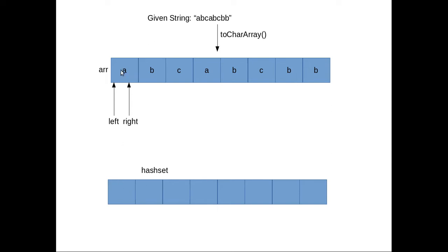The second case is if the character is already seen — we remove the character pointed to by left and then update the left pointer. It's important to remember: we are not removing the character pointed to by right even if we have already seen it. We are only removing the character pointed to by left. You will understand this as we go through the walkthrough.